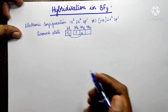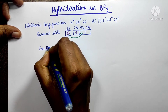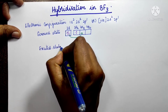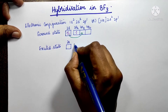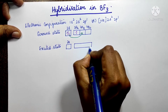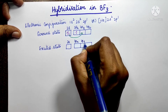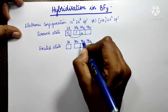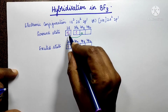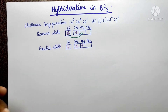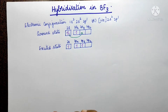In the excited state, the configuration changes. Now 2s has 1 electron, and we draw 2px, 2py, 2pz — each with 1 electron. So now Boron has three unpaired electrons, which allows it to undergo hybridization.